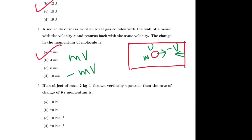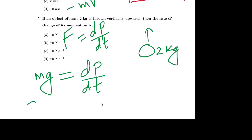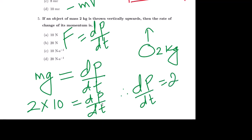Question 5: If an object of mass 2 kg is thrown vertically upwards, then the rate of change of its momentum is found using Newton's second law — force is the rate of change of momentum, F = dp/dt = ma. With mass 2 kg and g = 10 m/s², the rate of change of momentum is 20 newton.